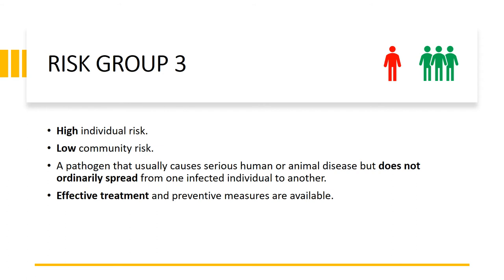Risk group three poses a high risk to the individual but a low community risk. This group of pathogens infects individuals; however, effective treatment in the form of vaccines or other therapeutic measures is available, and it does not pose a risk to the community due to the low risk of transmission.